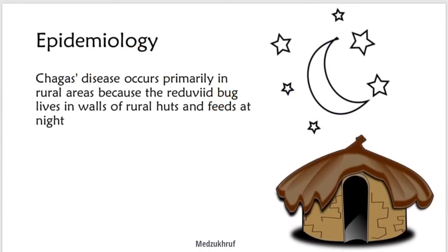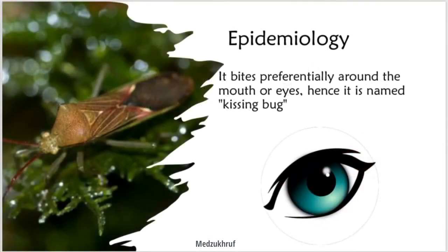Epidemiology: Chagas disease occurs primarily in rural areas because the reduviid bug lives in the walls of rural huts and feeds at night. It bites preferentially around the mouth or eyes — hence it is named the kissing bug.